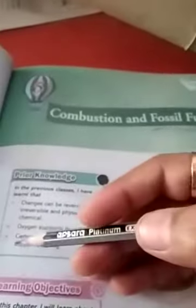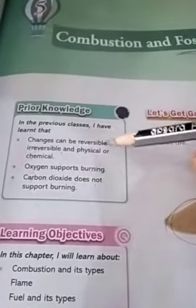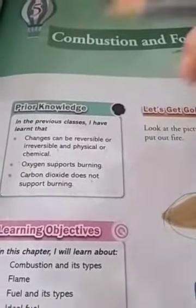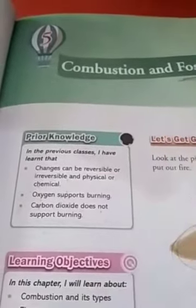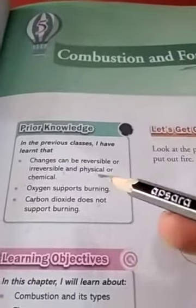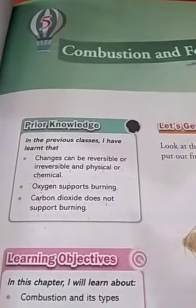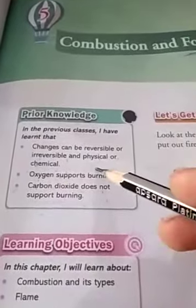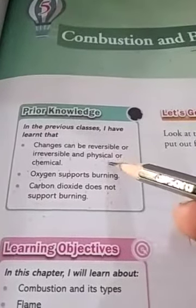From the previous class we came to know that changes can be reversible or irreversible, means they can reverse or not. They are physical or chemical — means if a new product is formed in any chemical reaction, then it will be a chemical change. If there is no new product formed, then it is a physical change.